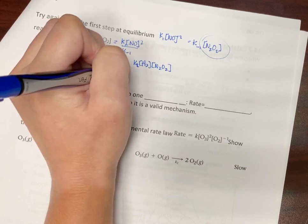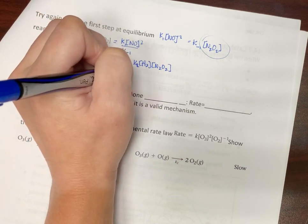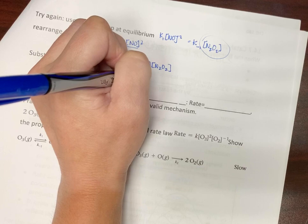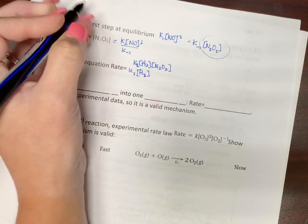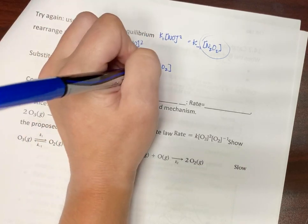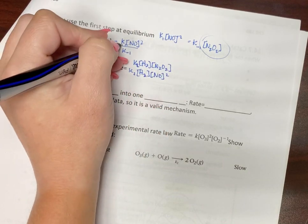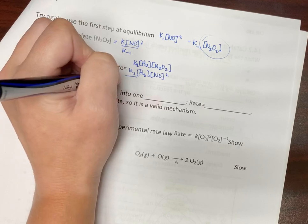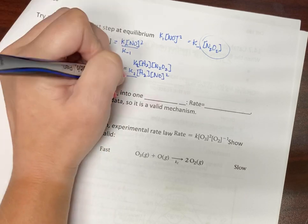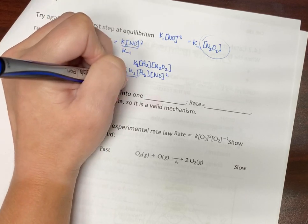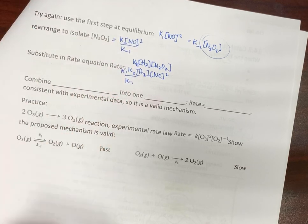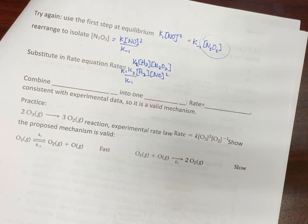So K2 and H2 and N2O2, or sorry, NO squared. And then let's keep our K's kind of together. Times K1 over K negative 1.